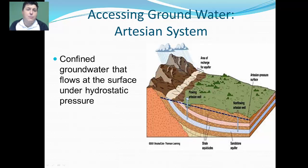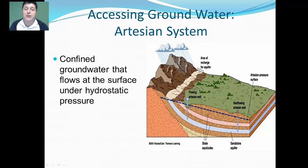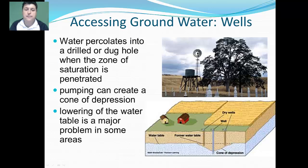Another way to access groundwater is by tapping into an artesian system. Confined aquifers are oftentimes under pressure, and when you break through, it starts to release that pressure and that water flows in what we call an artesian well. We can also produce traditional wells that aren't under pressure by inserting a pipe and a pump so we're able to pump the water out.